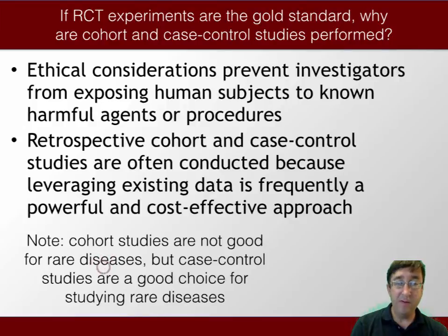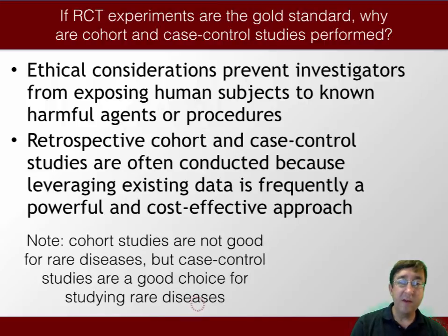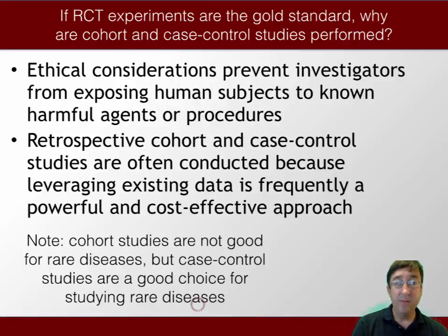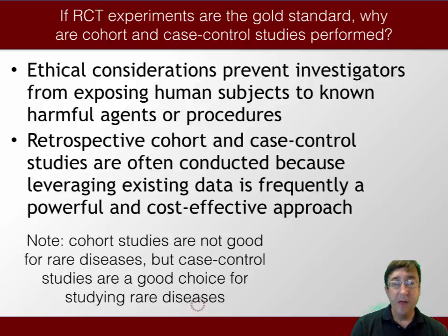Cohort studies are not good for rare diseases, but case control studies are a good choice for studying rare diseases. If we reflect on how a cohort study is organized — we start with a population and look forward in time — if the disease is rare, the pool of subjects may not be large enough to obtain anyone with the disease, making it a very poor study design. However, if we use case control, we start with known cases of the disease and matched controls, giving us a reasonable number of subjects to conduct the study, and then look backwards in time.